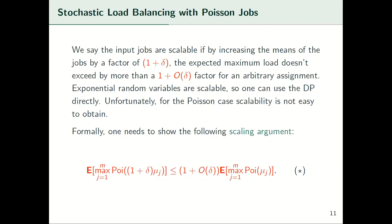The problem is that scalability is not obvious for the Poisson case. Formally, one needs to show the star equation. This equation states that after scaling the means by 1 plus delta, the expected makespan won't increase by more than a 1 plus delta factor. This equation is the heart of the PTAS, so let's take a look at it.